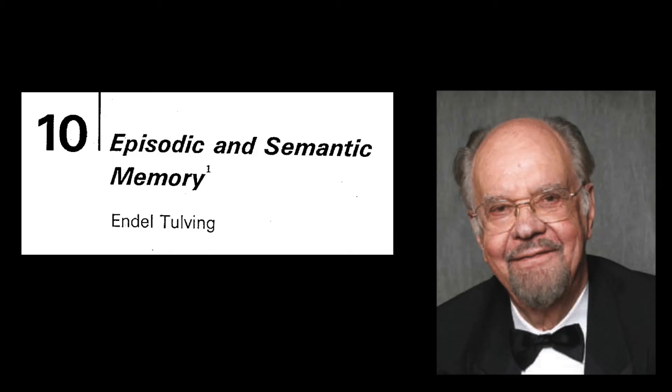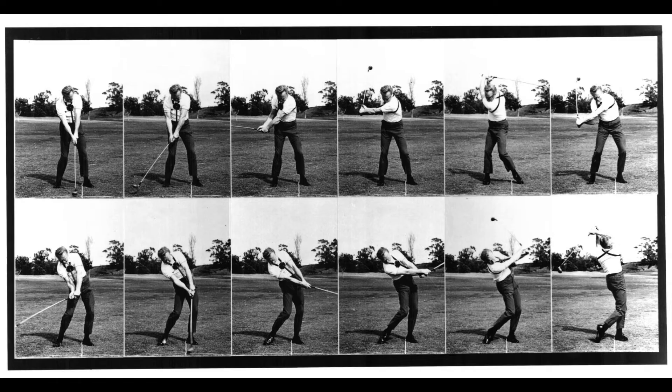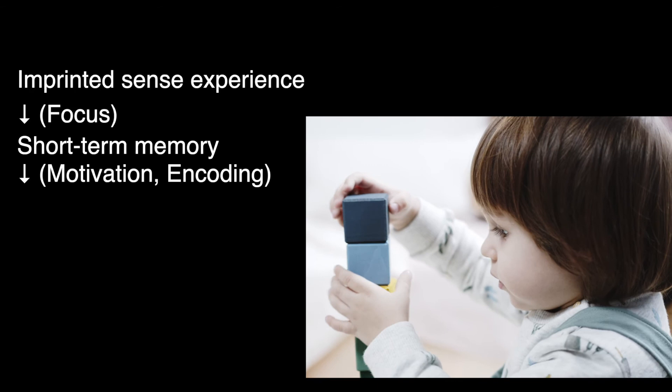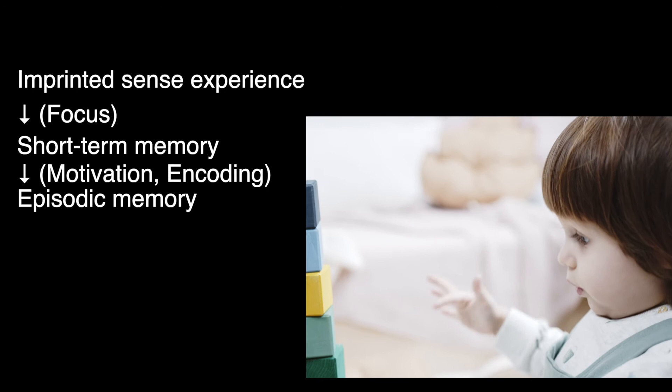Did you get any of that? I'm going to give my non-introspective interpretation of this, which is rooted in Endel Tulving's model of memory. According to Brouwer, we are sequences of experiences in the territory with instinctive desires. At any given moment, the territory imprints a sense experience on us. If we focus on a particular experience, it becomes conscious and wanders into our short-term memory. Further, if the right motivation is present and encoding is easy, these memories are then stored into our episodic memory. Episodic memory can be thought of as stored sequences of experiences over time.